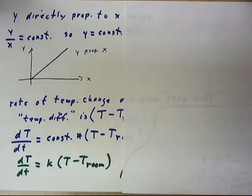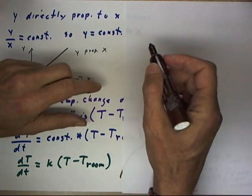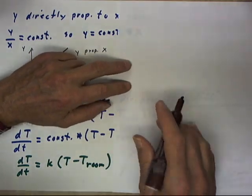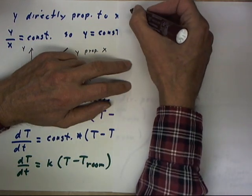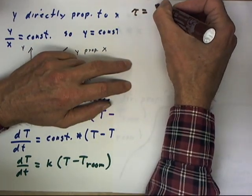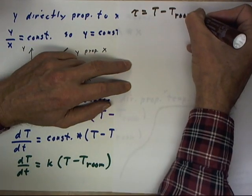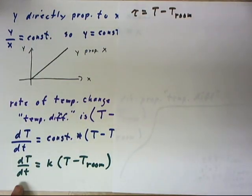Now we can do a change of variable, and this is an important and powerful technique in mathematical modeling and in the differential equations course. I'm going to let tau equal T minus T room. Now my equation will become dT/dt, d big T d little t, equals k times tau.